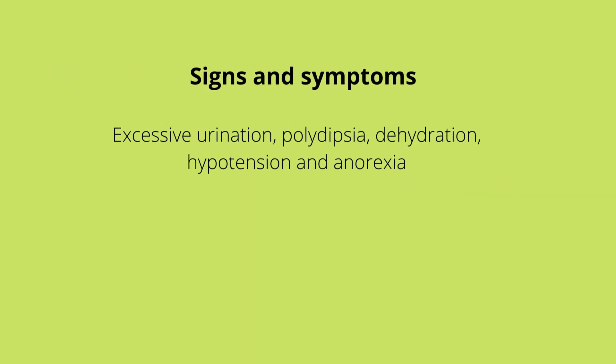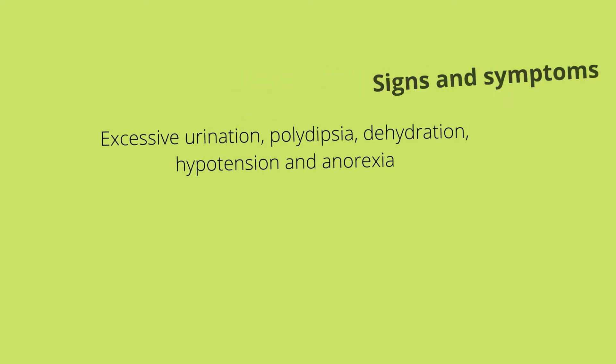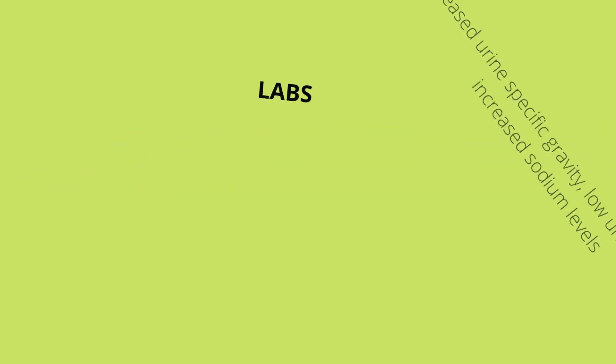Signs and symptoms: The patient will have excessive urination of dilute urine — they are just dumping water. Polydipsia, which is excessive thirst. Dehydration, hypertension, and anorexia.